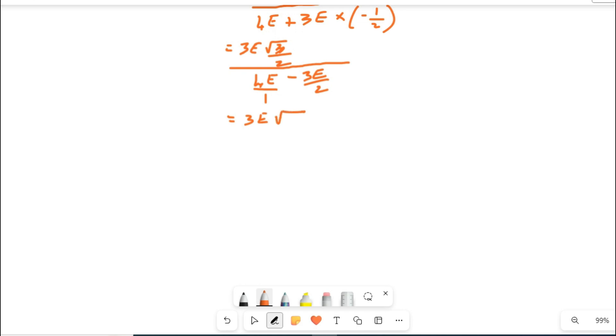You can solve now. Numerator copying again: 3E root 3 by 2. Then denominator normal LCM. Like 2 into 4E will come first, so 2 into 4E will be 8E minus 1 into 3E, so that will be 3E. So I am going to write here 8E minus 3E divided by denominator, 1 into 2, so it will be 2 only.